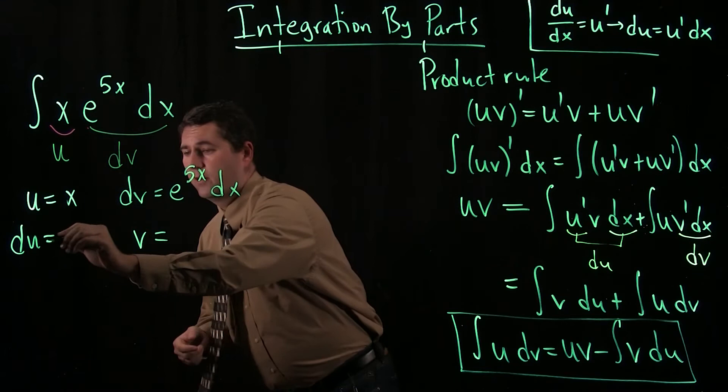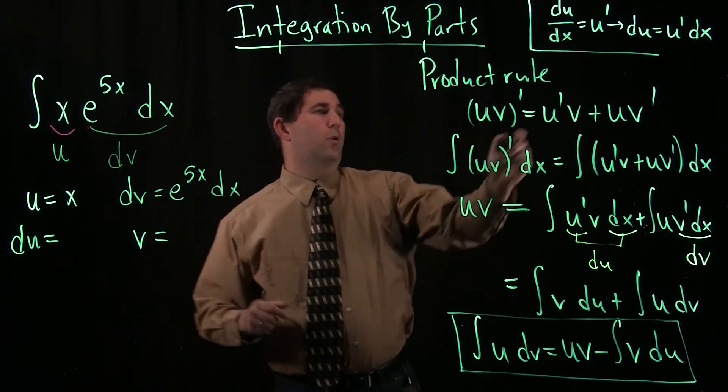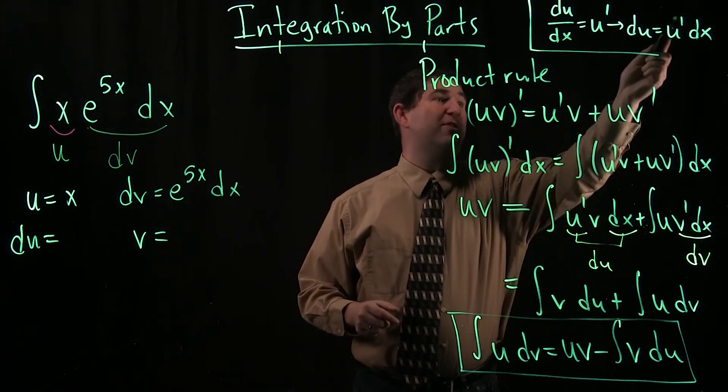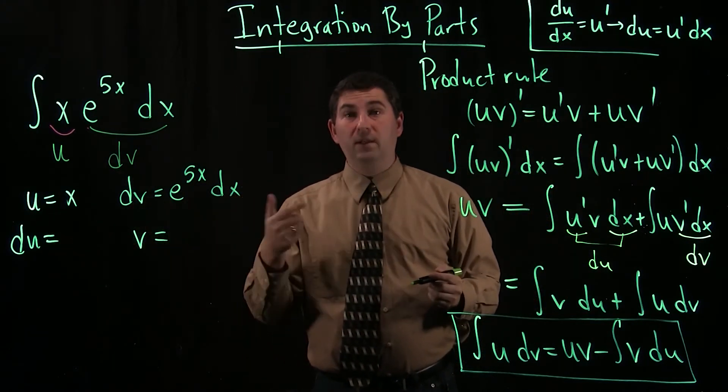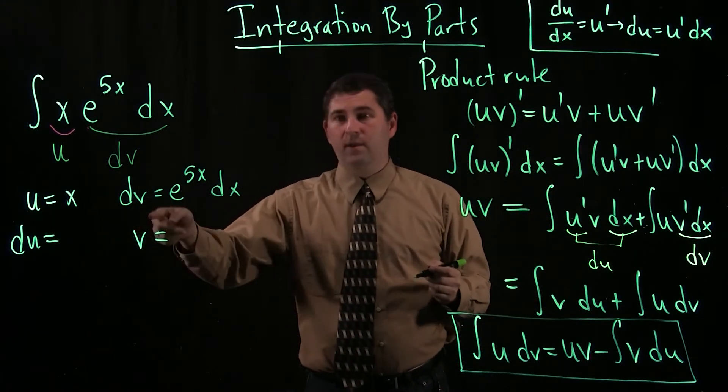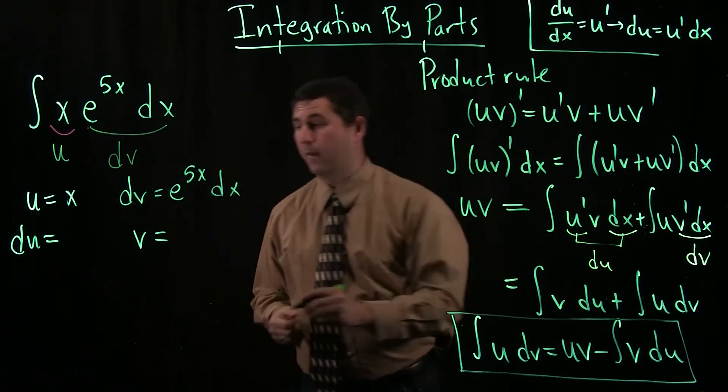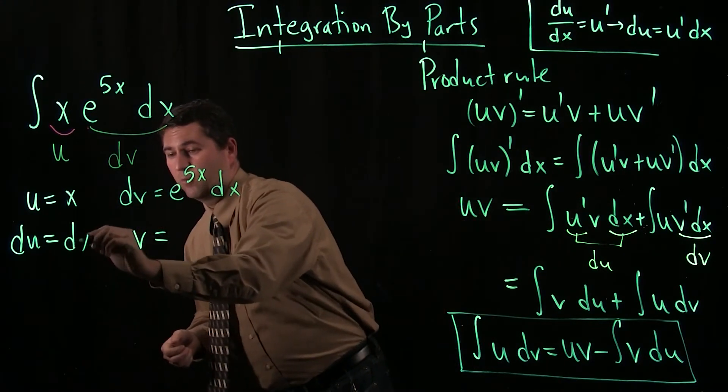Alright, let's see. So, first, finding du. Well, according to this little formula, du is just the derivative of u times dx. If u equals x, then du is just going to be 1 dx, because the derivative of x is 1. So, 1 dx, and we just write the dx.